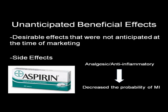Unanticipated beneficial effects are the desirable effects of drugs that weren't anticipated at the time of drug marketing. Even though these effects might still be medically useful, they're still considered side effects, even if they're not for the purpose for which the drug was given. An example is aspirin — patients given the drug for its analgesic or anti-inflammatory action were found to have a lower chance of a subsequent MI, and this has since been confirmed as a valid new indication.